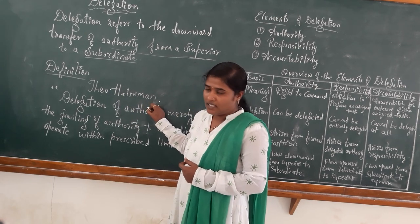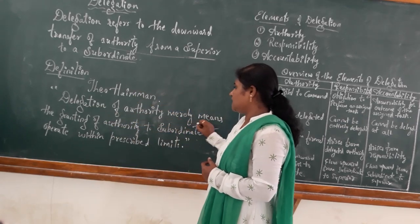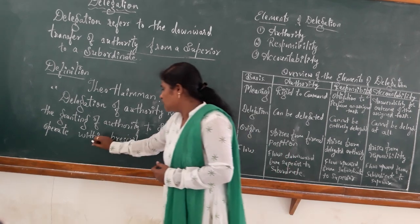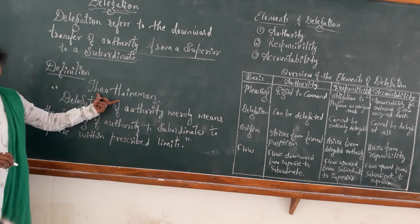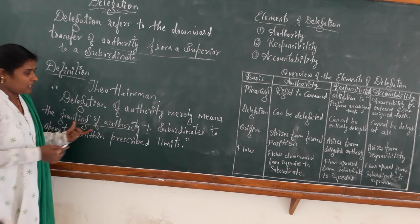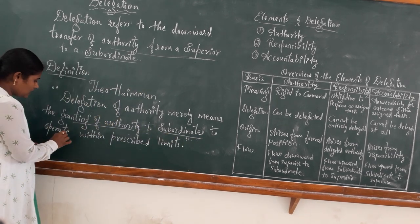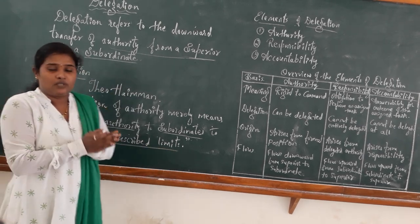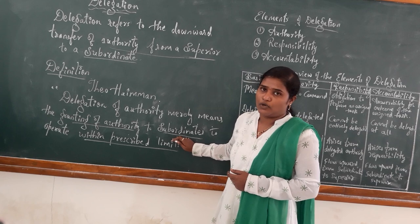According to Theo Hyman, the definition of delegation is: delegation of authority merely means the granting of authority to subordinates to operate within described limits. Whatever limits are set for the employees, that authority is transferred by the supervisors to the subordinates.